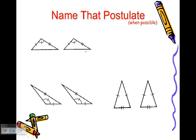Let's name the postulates here. What would I use to prove this top one on the left? You have a side, an angle, and a side of one triangle congruent to a side, an angle, and a side of another triangle. So you have SAS congruence there.